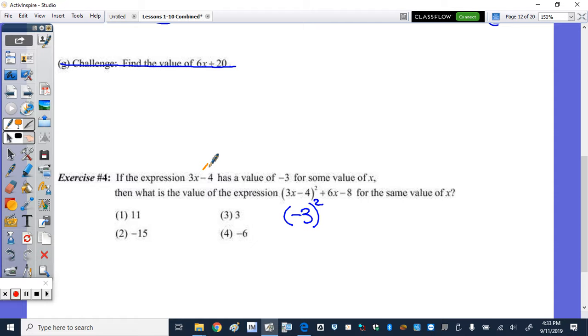So right away, I can replace this 3x minus 4 squared with negative 3 squared. And then I have the plus 6x plus 8. Well, look, the 3 changed to a 6 by multiplying by 2. And the negative 4 changed to the negative 8 by also multiplying by 2. So I can rewrite this 6x plus 8 as 2 times 3x minus 4, which gives me, again, the value. This is really 2 times negative 3.